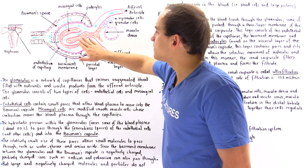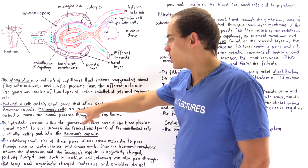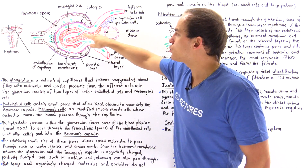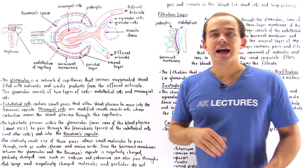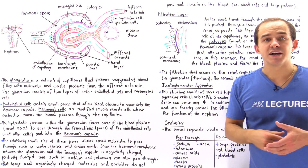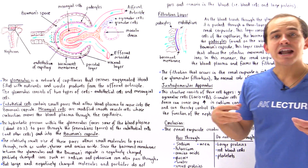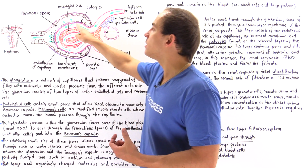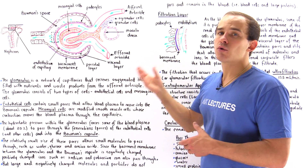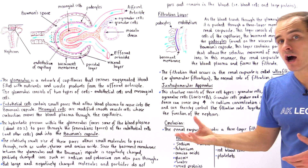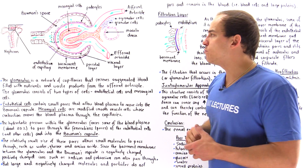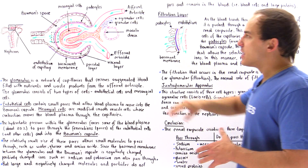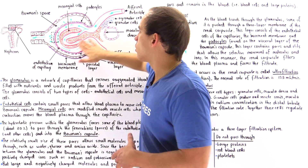The other type of cell found in the glomerulus is known as the mesangial cell, shown here in orange. The mesangial cells are modified smooth muscle cells that are responsible for contracting the blood vessels inside our glomerulus, which speeds up or slows down the movement of blood plasma through our glomerulus.